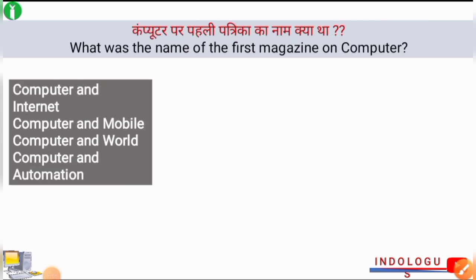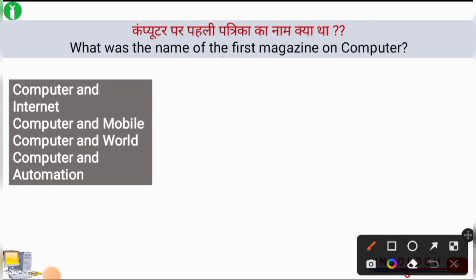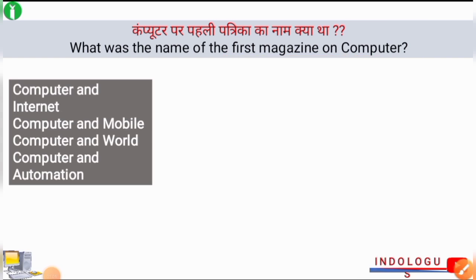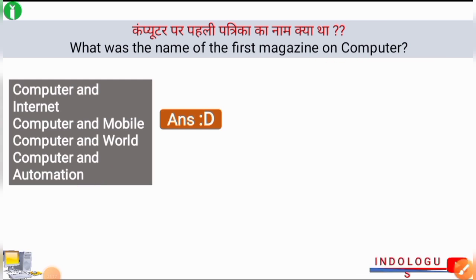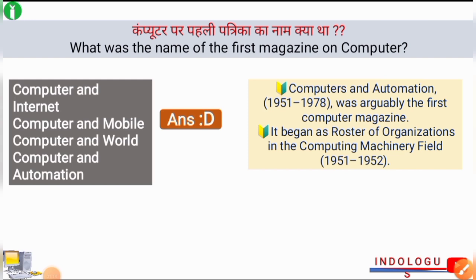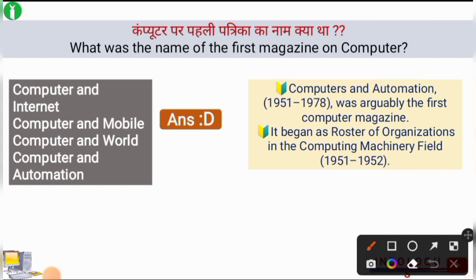Next question: What was the name of the first magazine on computer? The right answer is option number D, Computer and Automation. Computer and Automation was the name of the first ever magazine which was based on computers. It was arguably the first computer magazine and it began as a roster of organizations in the computing machinery field.